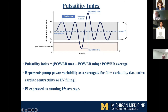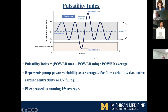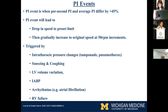Pulsatility index — what does that mean? It's really measured as a 15-second average: maximum power minus minimum power over average power. Since power is a surrogate for flow, it's essentially maximum flow minus minimum flow over average flow during that period. Any variability in that flow can be seen as a PI event, due to changes in LV filling, native cardiac contractility, arrhythmias, and so on. Any drop in flow can be interpreted as a PI event. If your PI varies by greater than 45%, it's logged as a PI event.